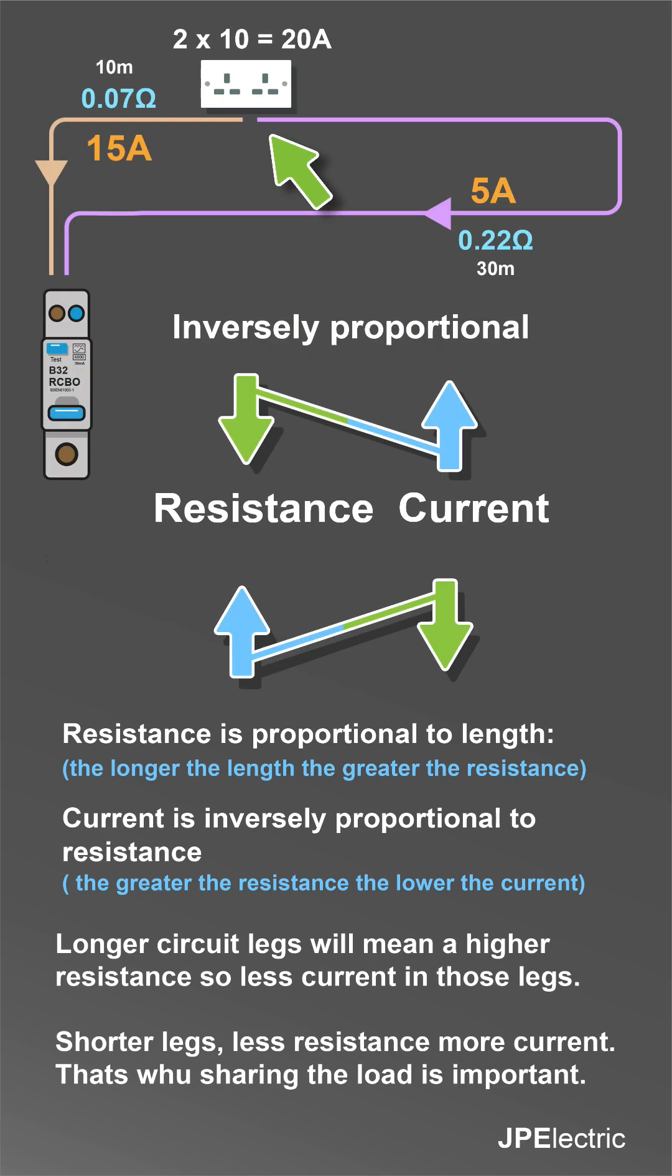So resistance is proportional to length. The longer the length, the greater the resistance. Current is inversely proportional to resistance. The greater the resistance, the lower the current. Longer legs mean higher resistance, so less current in those legs.